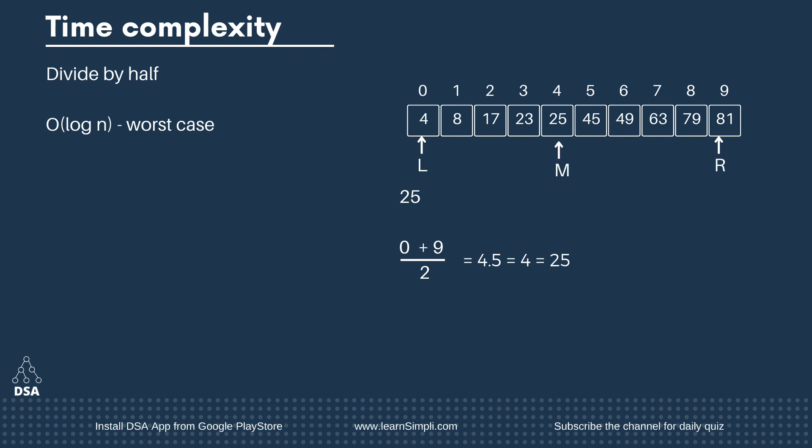We found 25 in the first search itself. This is the best case, and in the best case the time complexity would be O(1). O(log n) is better than O(n), and O(n) is the time complexity of linear search.